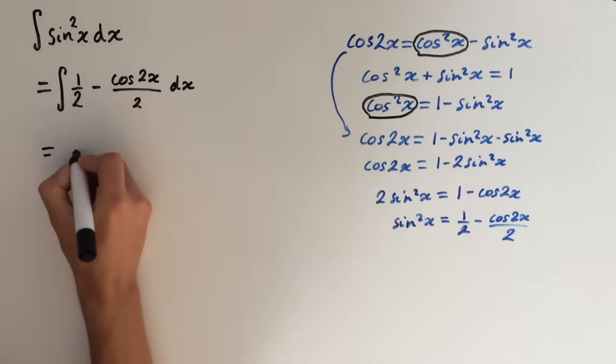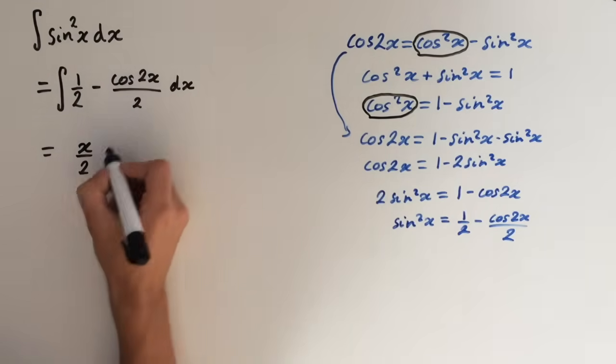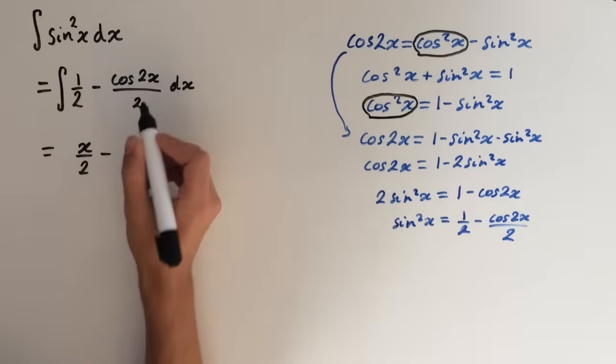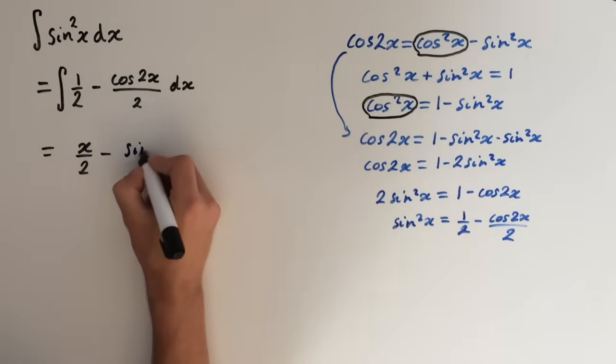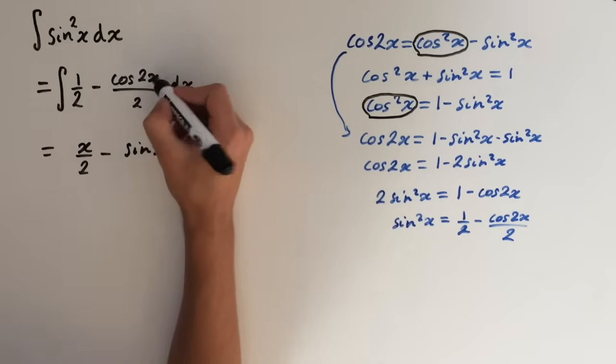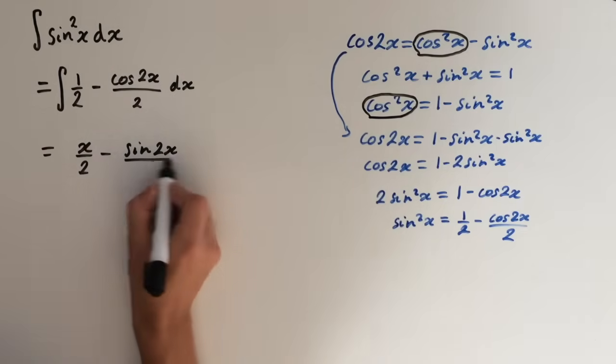So integral of 1 half is just x over 2. And integral of cosine is sin. So sin of 2x, because we can't change the 2x here. And this will be over 2.